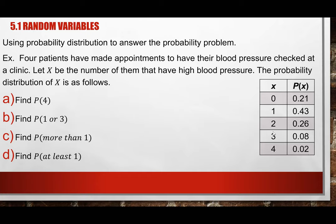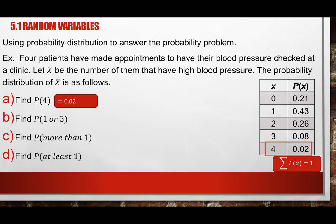They ask: what is the probability that all 4 out of 4 have high blood pressure? Looking at the distribution, P(x = 4) = 0.02, so the probability is 2%. This is an unusual event because it is less than 0.05. If the probability distribution is given, you simply look up the value — no calculation needed.